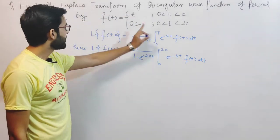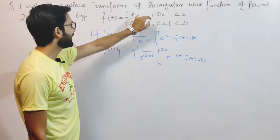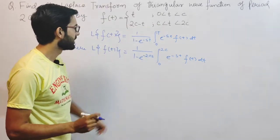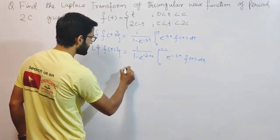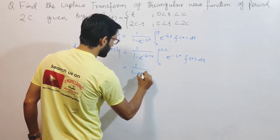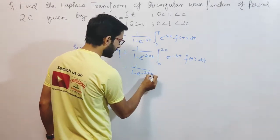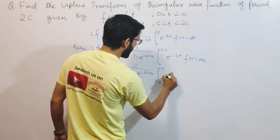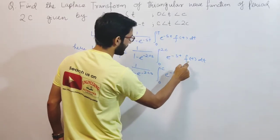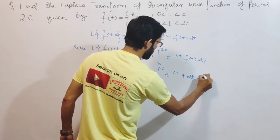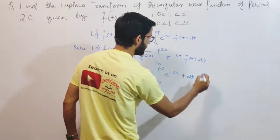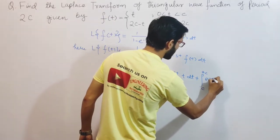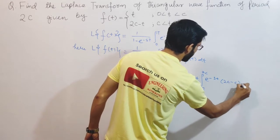Since the wave has two different values over one period, I split the integral into two parts. From 0 to c, f(t) = t, and from c to 2c, f(t) = 2c minus t. So the expression becomes: 1 over (1 minus e^(-2cs)) times the sum of the integral from 0 to c of e^(-st)·t dt, plus the integral from c to 2c of e^(-st)·(2c minus t) dt.